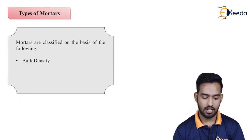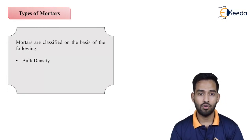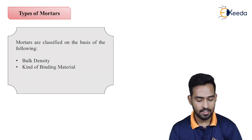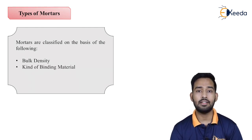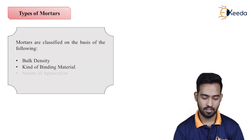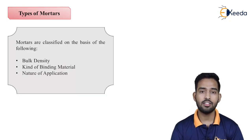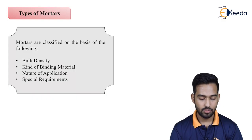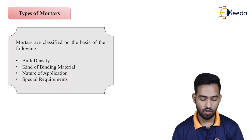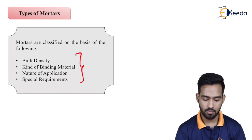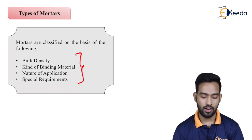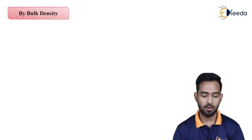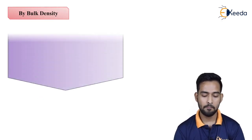Mortar is classified on the basis of the following terms: first is bulk density, then the kind of binding material we are using, then the nature of application where we are applying it, and then special requirements. So on these four bases, we divide the mortar types.